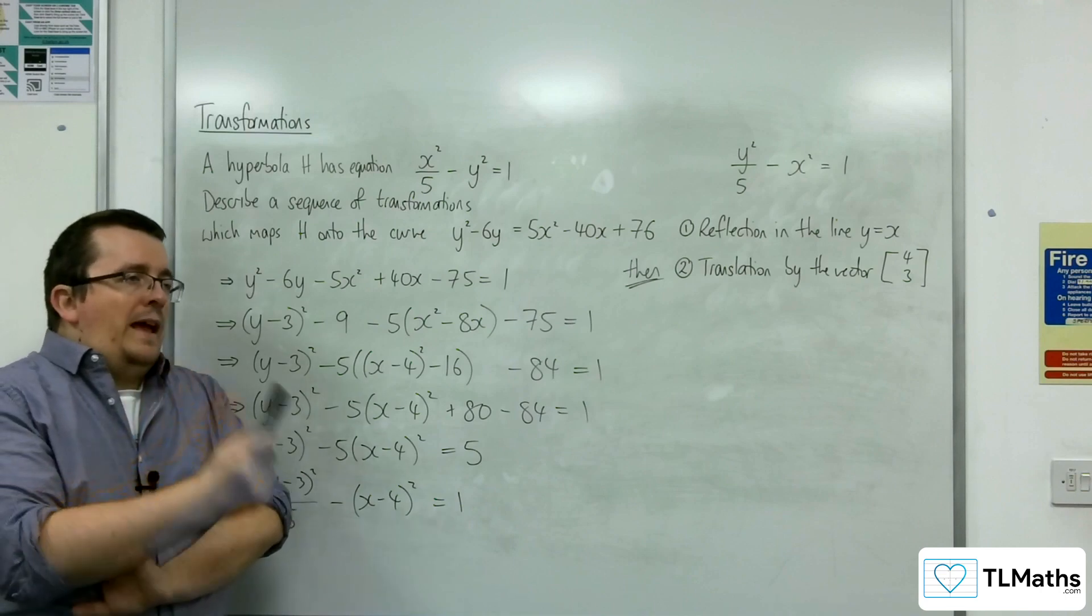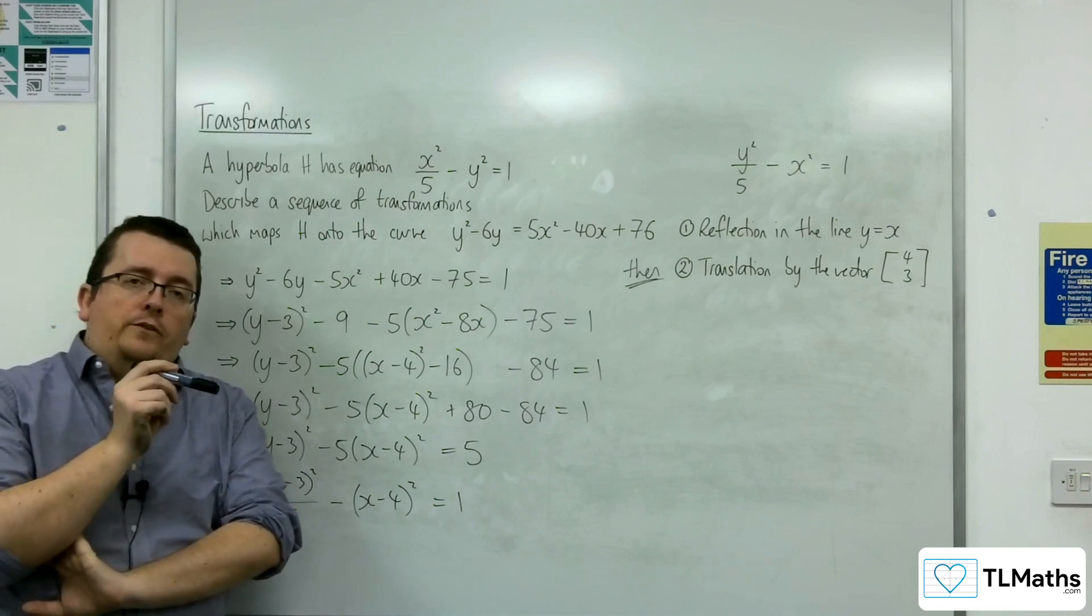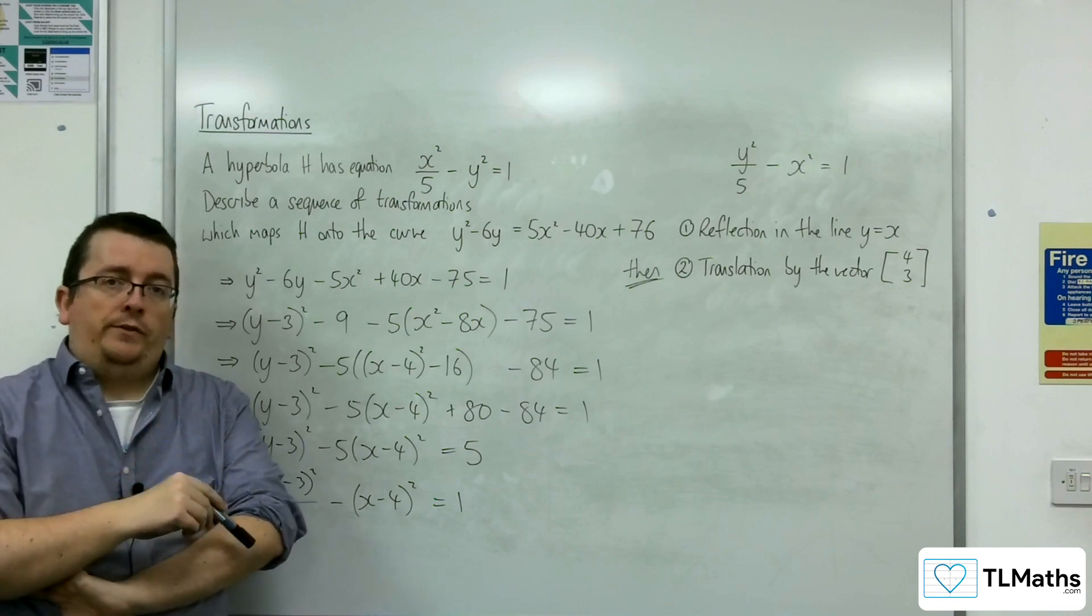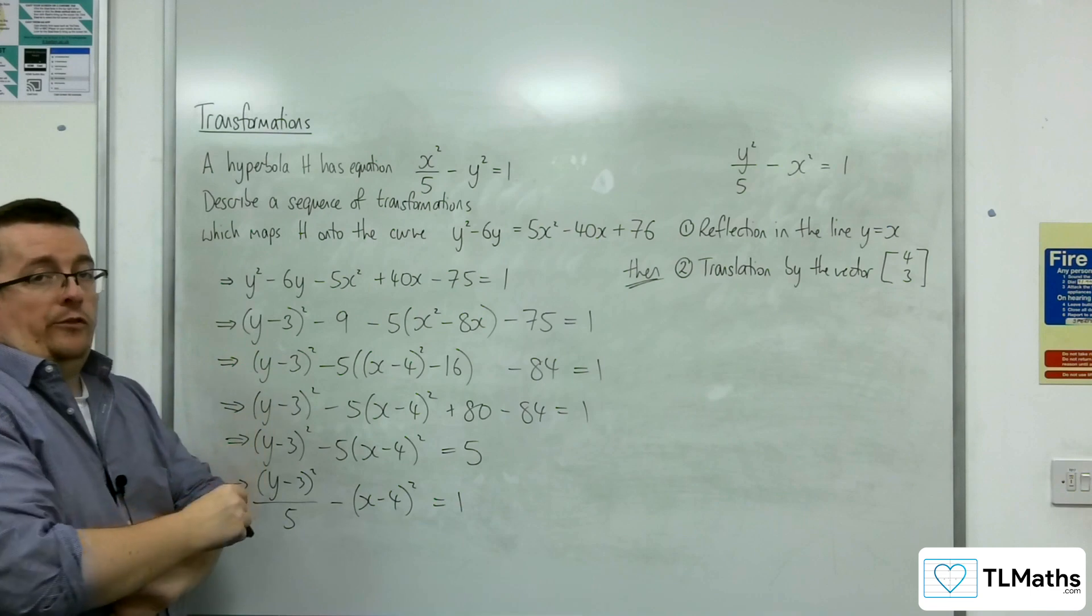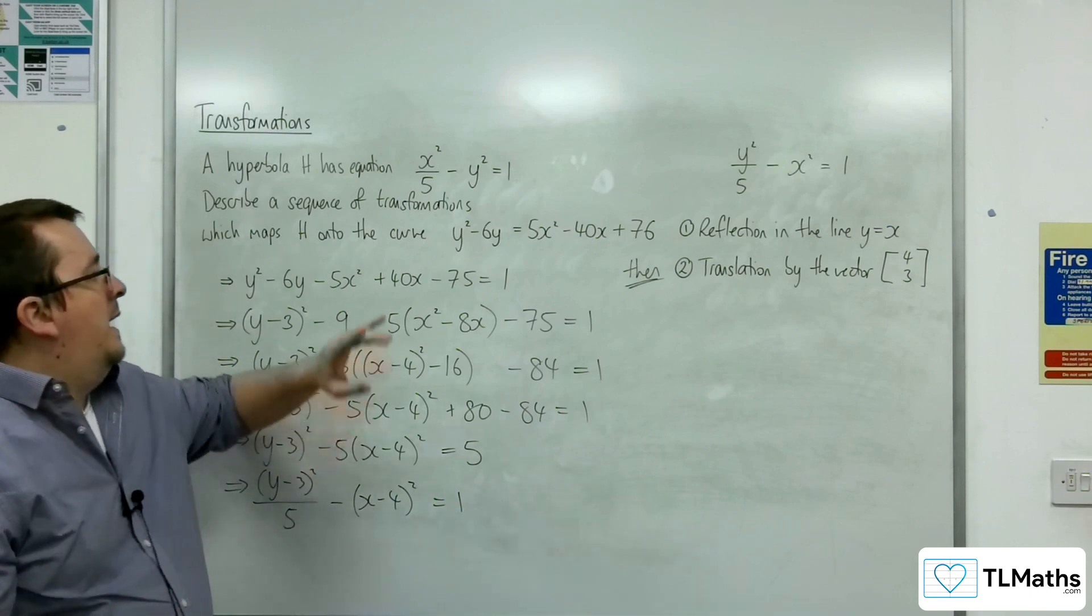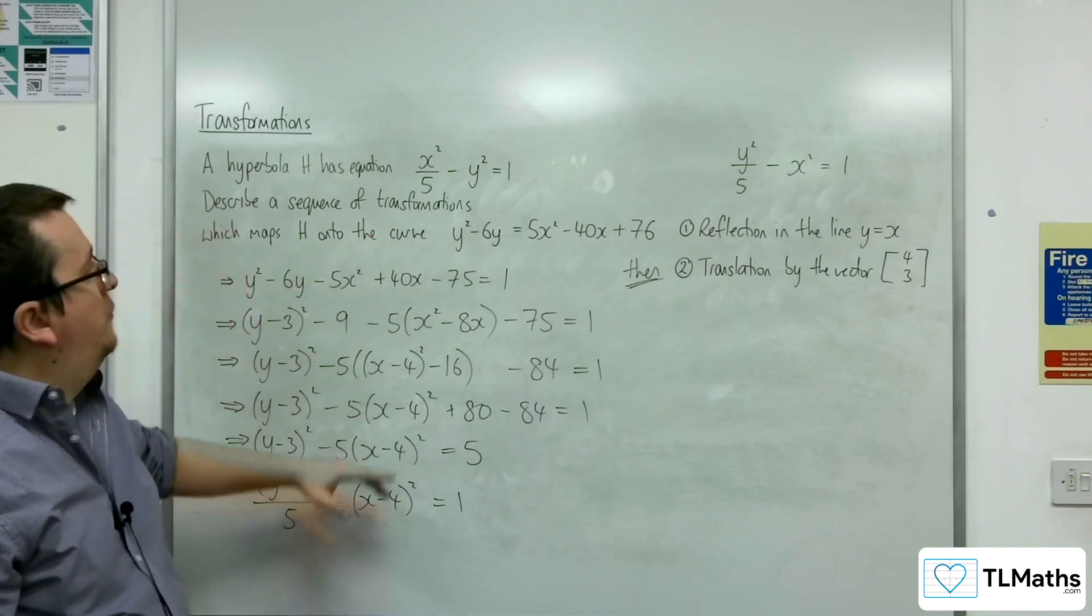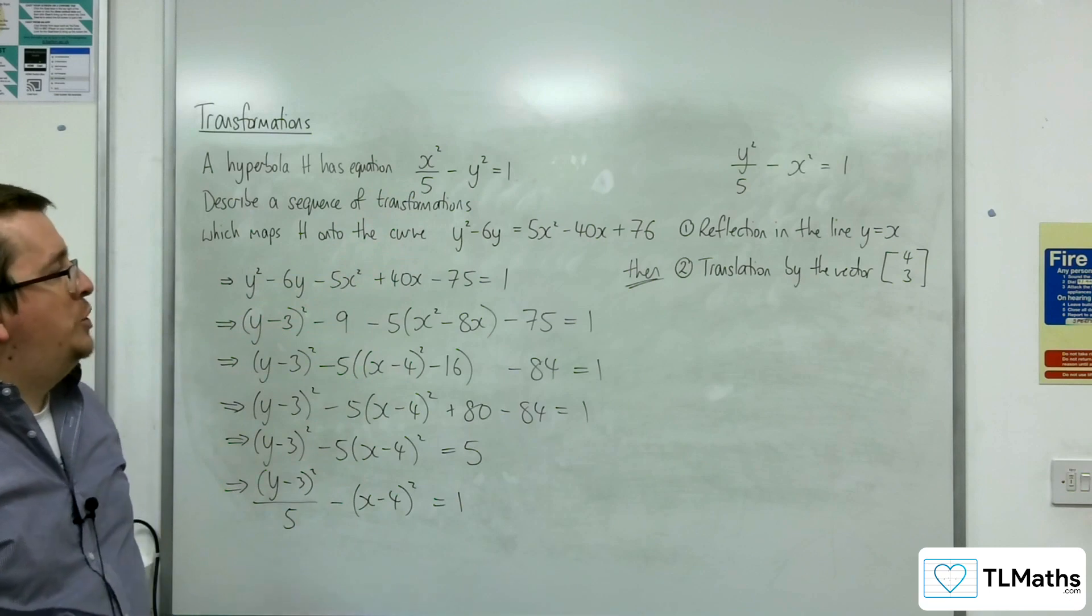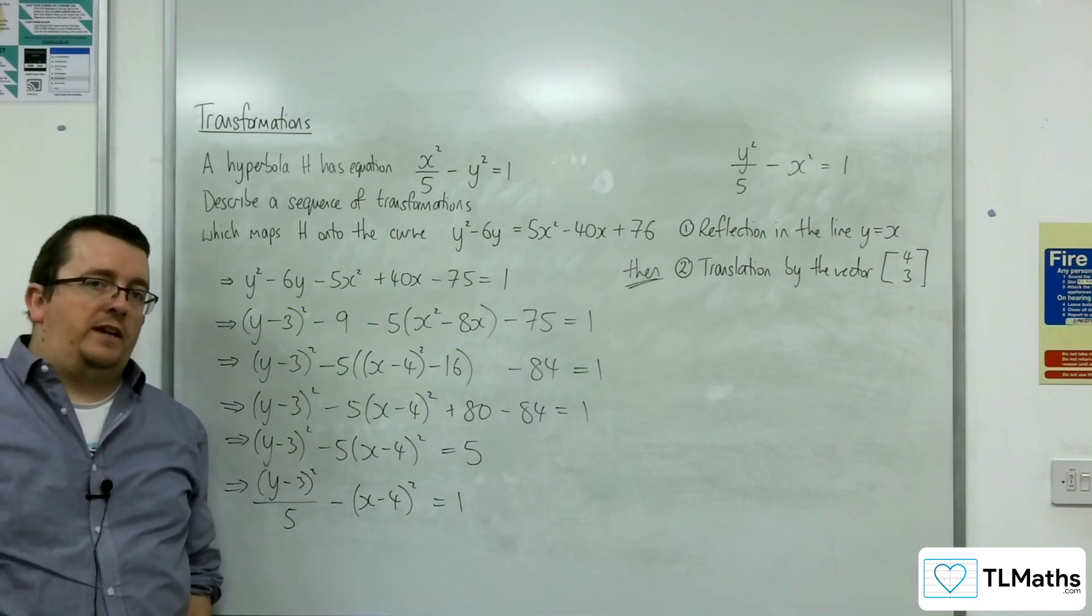So as I said, there may well be other ways of describing the transformations, but that was the easiest one to spot for me. So really, it's all about getting the algebraic manipulation, trying to get it into the form of the original curve, so that then you can start spotting where the transformations have taken place.